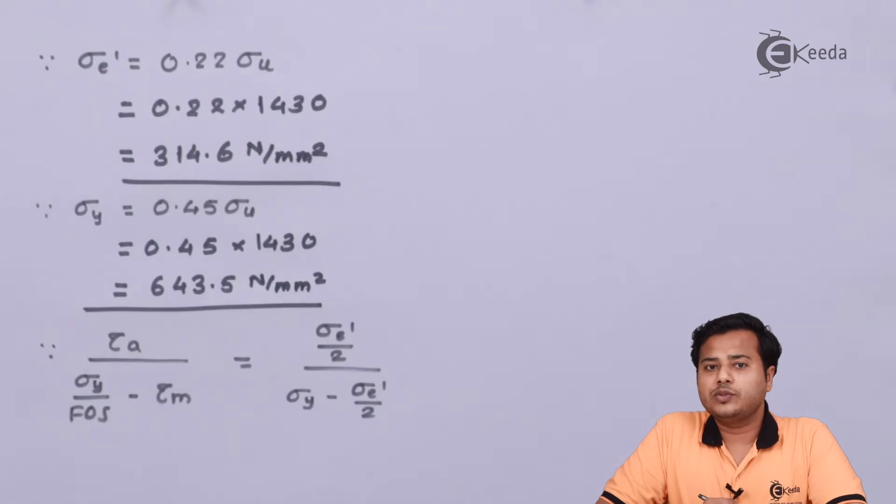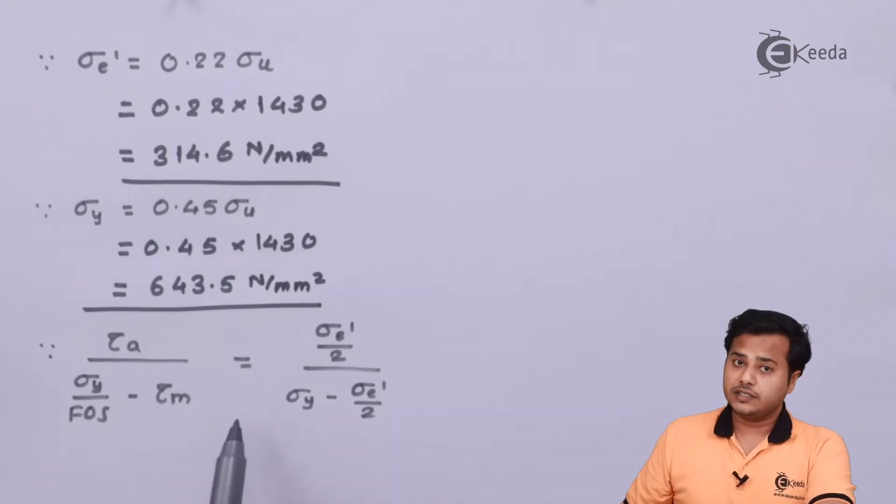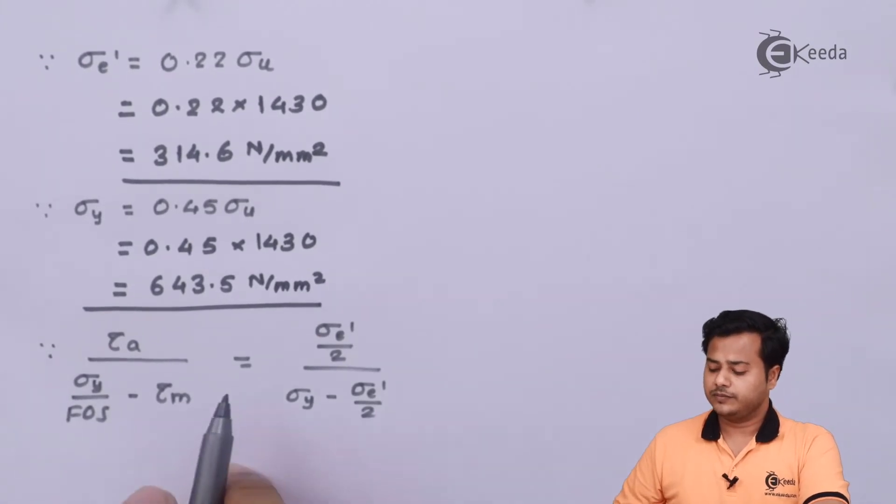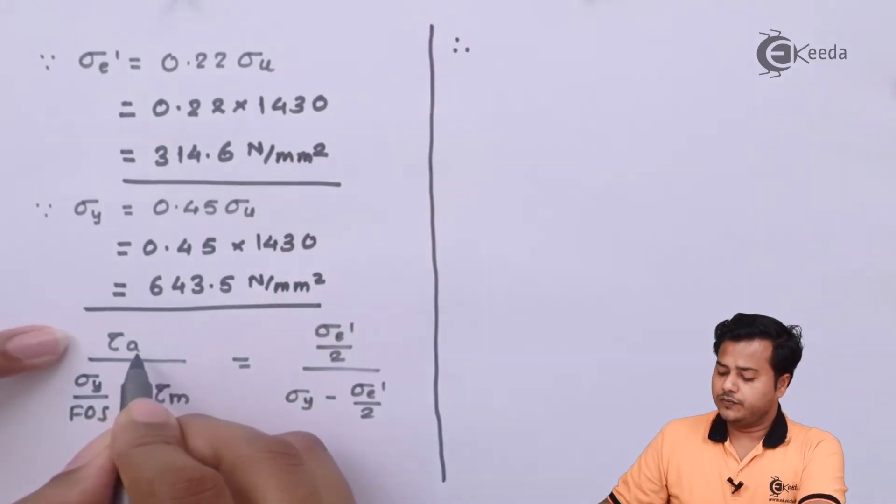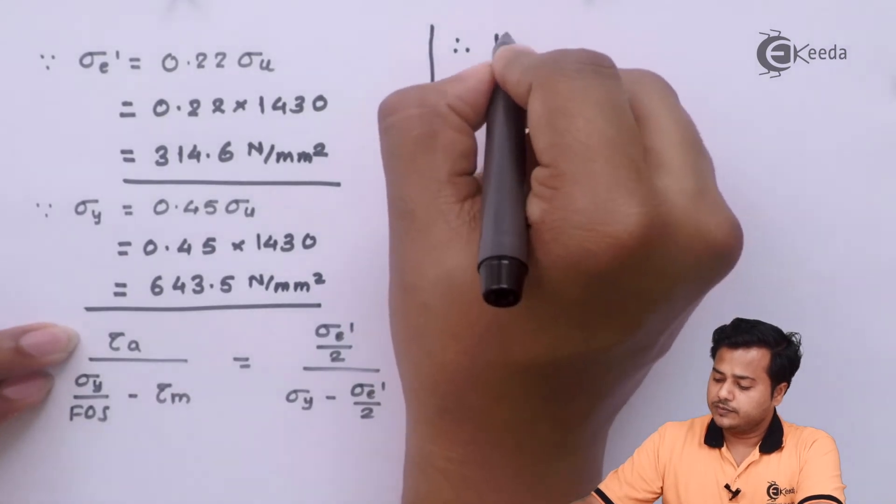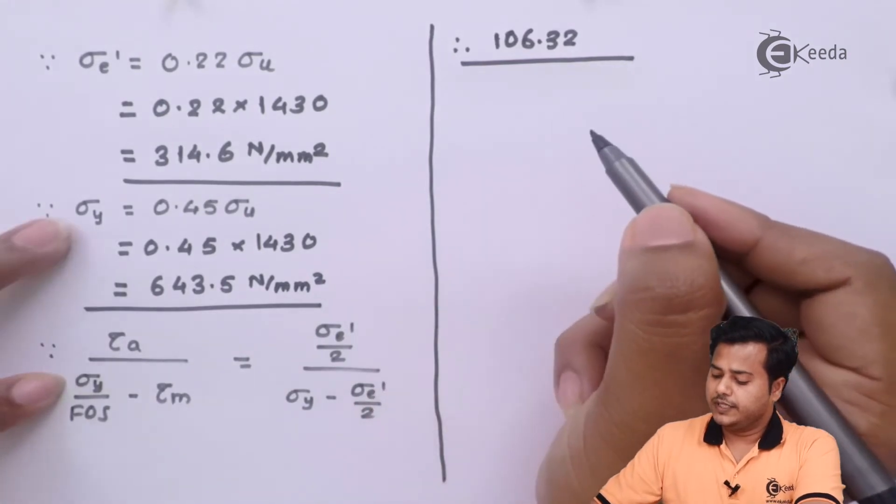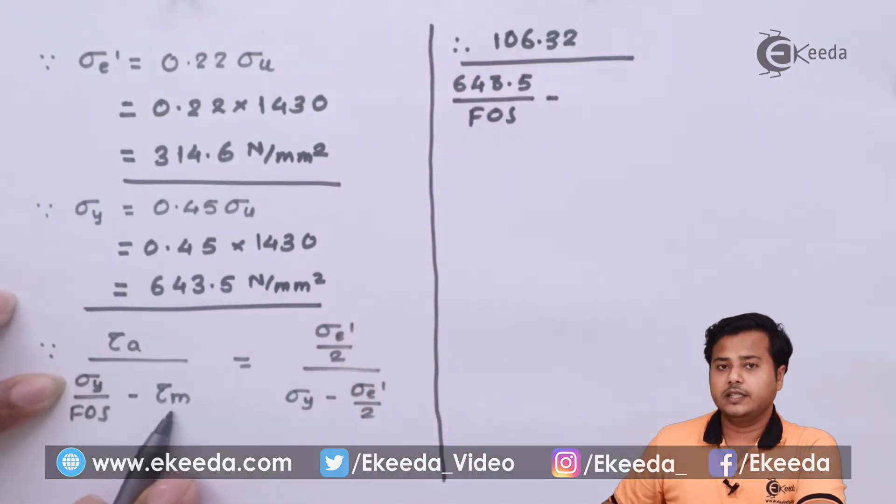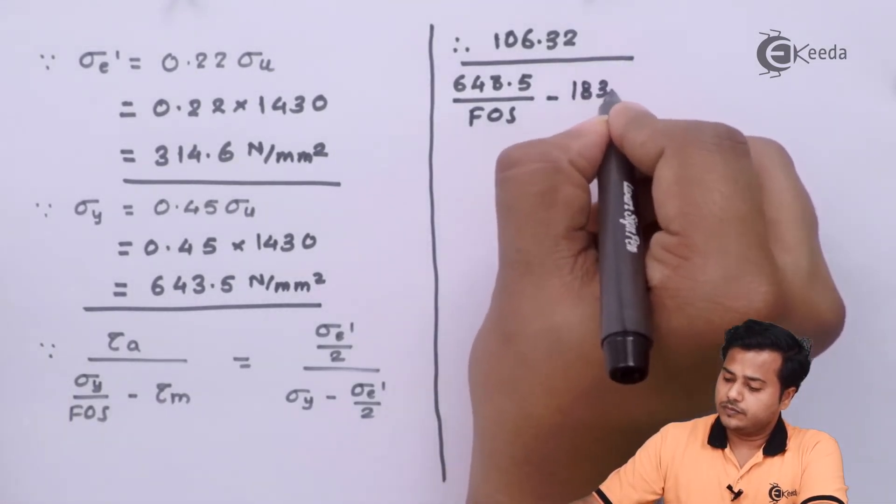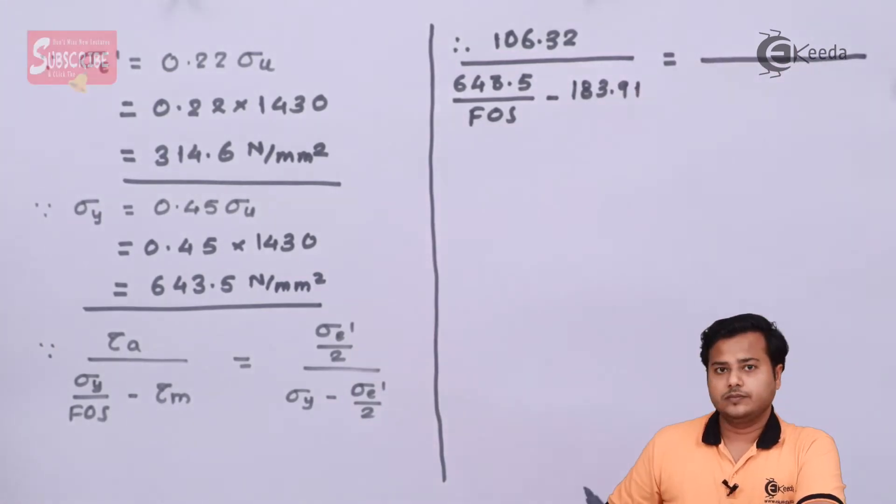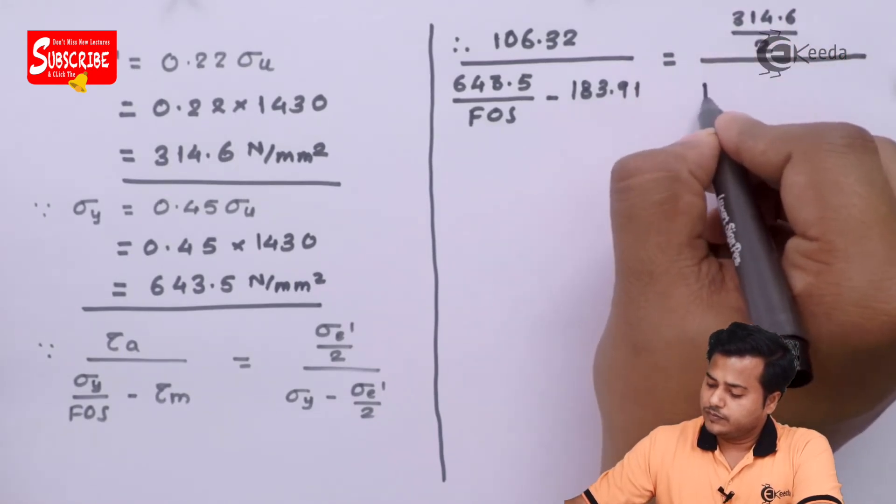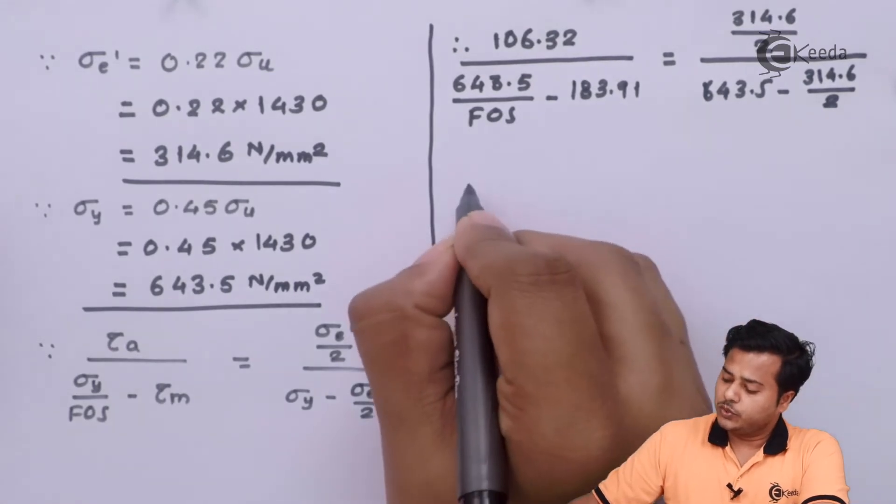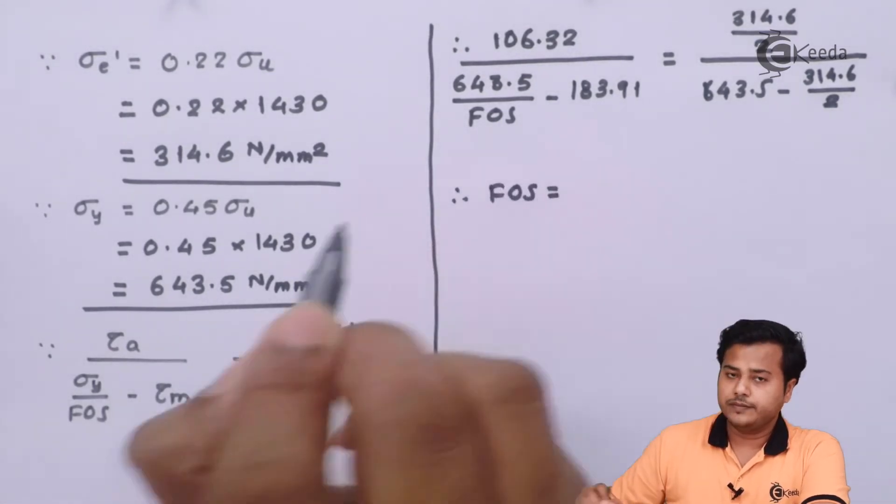Having known these values, the next important thing is to put them into the relation, empirical relation. You can of course find this relation in PSG data book where you need not memorize this particular relation. Using this relation, let us move ahead. The value of amplitude torsional stress divided by the yield stress divided by unknown which is FOS minus the mean value is equal to, so after solving this expression, the only unknown that we have is factor of safety comes out to be somewhere around 1.26.